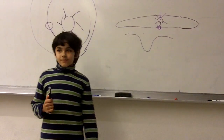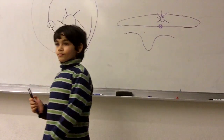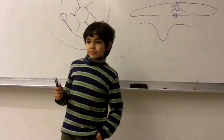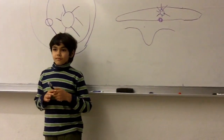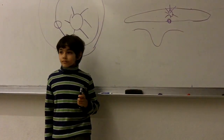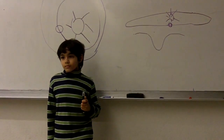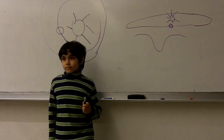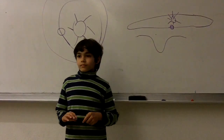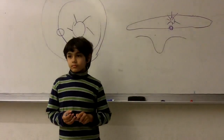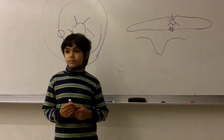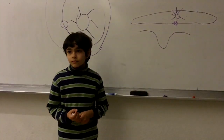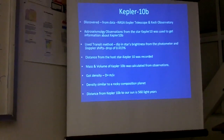Everyone understand the transit technique? If you have a planet passing in front of a star, it will block a little bit of the total brightness of the star, and you get a dip in the flux. But you can only use this technique if you are in the line of sight with the planet system — if the orbit is perpendicular, it never transits, so it works for some cases but not all.